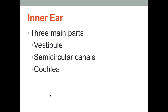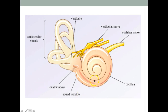This area right here that looks like a snail is the cochlea, and this part of the labyrinth is involved with hearing. This middle portion is the vestibule, which is involved with static balance and acceleration. These structures over here are called the semicircular canals. Very important to remember these three structures: the cochlea, the vestibule, and the semicircular canals.